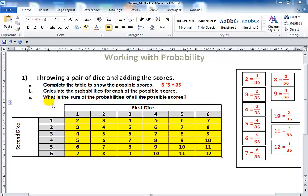Now let's look at the third question here: what is the sum of probabilities for all the possible scores? All you have to do is add up all the possible scores that you have here, and right here I have the solution to that.